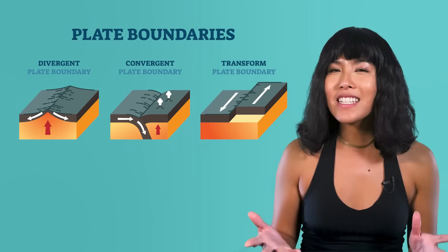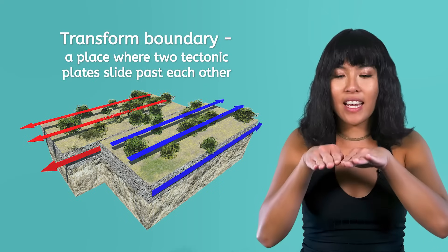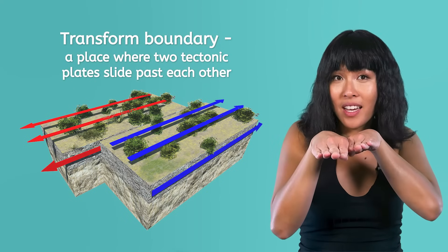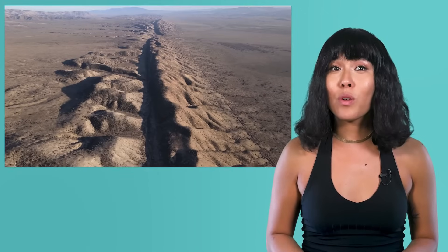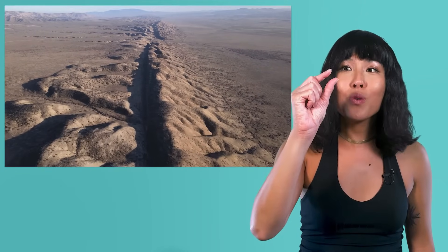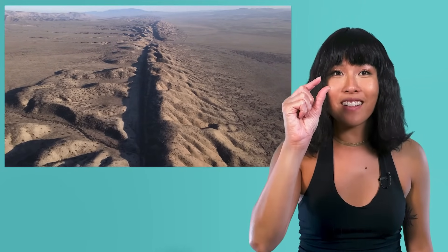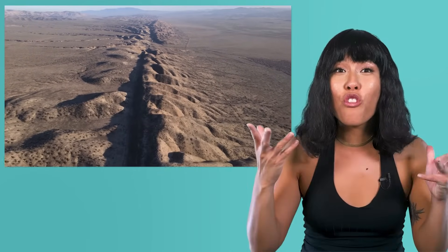And the last kind of plate boundary is called a transform boundary. This happens when two plates are sliding past each other. These boundaries don't create mountains or melt down tectonic plates, but the constant grinding past each other does create a lot of earthquakes. The San Andreas Fault Zone in California is a transform boundary, and it is one of the fastest changing plate boundaries in the world. It moves about two inches every year.